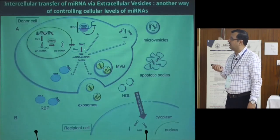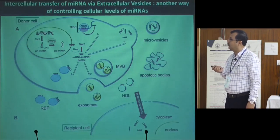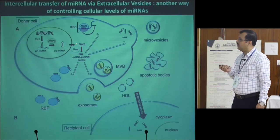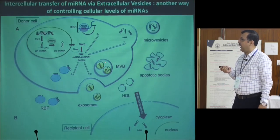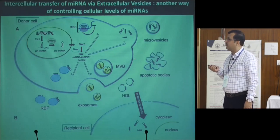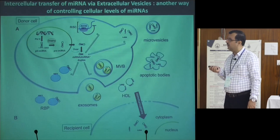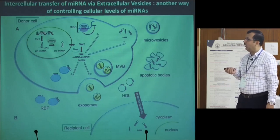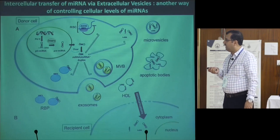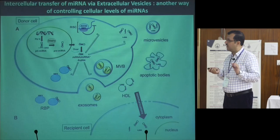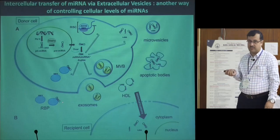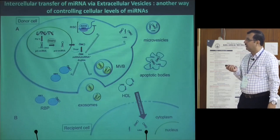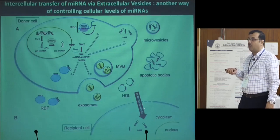MicroRNA is processed inside the nucleus, matures in the cytoplasm, and induces translational repression. But microRNA can also get packed into certain vesicles in multivesicular bodies — endosomal compartments — and these multivesicular bodies can fuse with the cytoplasmic membrane and release small vesicles called exosomes, or extracellular vesicles, depending on the marker proteins present. They can carry small RNAs like microRNA, sometimes messenger RNA, and certain protein factors between cells.